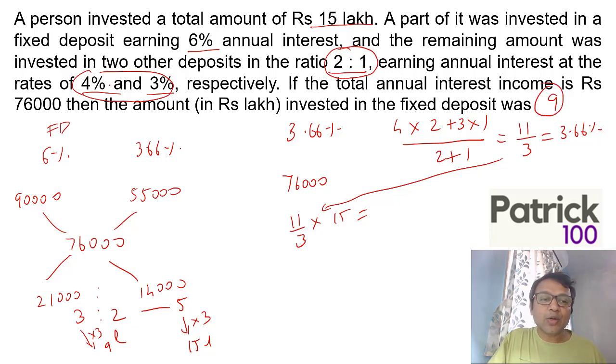I repeat: I want to do allegation so I combine 4% and 3% first, mixing in ratio 2:1 to get average 3.66%. If I invest complete 15 lakhs at 3.66% I get 55,000. At 6% I get 90,000. Mixing these to get average 76,000, do allegation and get ratio 3:2, answer 9 lakhs. Allegation is a good method to solve faster. By solving with faster methods you save time and can solve more questions.